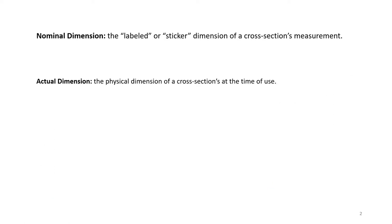Second, sawn lumber is described according to its nominal, not its actual dimensions. Nominal dimensions are the labeled or sticker dimensions of a cross section. If you go up to it with a ruler or calipers and actually measure the dimension, those are the actual dimensions, while the labeled or sticker dimensions are the nominal dimensions.